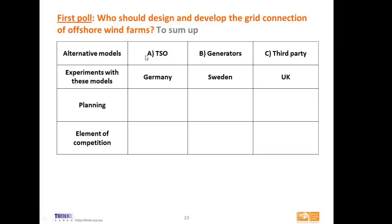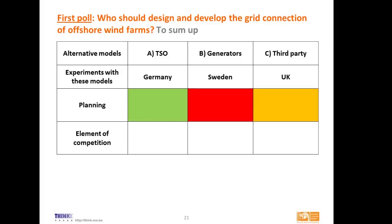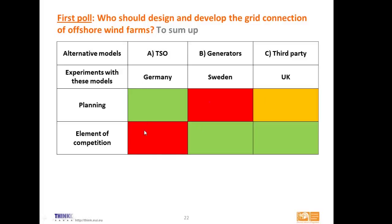Summing up: we had three alternative models — TSO-focused, generator-reliant, and third-party tendering. We now have three experiments: Germany with the TSO model, Sweden with generators, and the UK with the tendering model. What the slides show is that it may not be so important to have a favorite among these models — what matters is the implementation and whether it includes an element of planning and an element of competition. Germany already has advanced connection planning; Sweden does not yet; the UK is considering it. For competition: there is currently no competition element in the German scheme, while Sweden and the UK already have one.